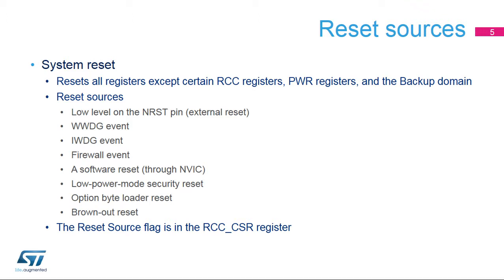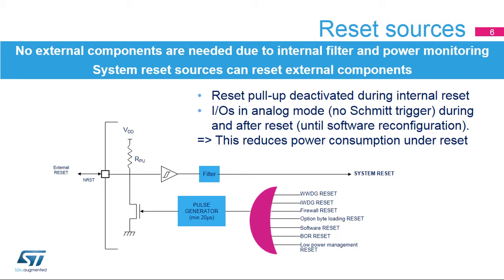The reset source flag can be found in the RCC control and status register. All internal reset sources provide a reset signal on the NRST pin, which can be used to reset other components of the application board. No external reset circuitry is needed due to the internal glitch filter and the safe power monitoring feature, which guarantees the reset of the application when VDD is below the selected threshold. The internal pull-up on the NRST pin, which maintains a high level when no reset signal is driven low, is deactivated when an internal reset is driven in order to reduce power consumption under reset.